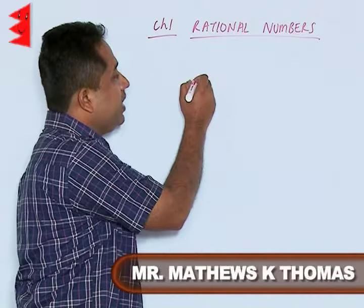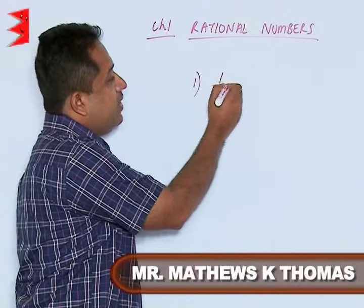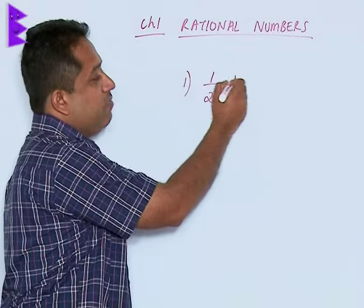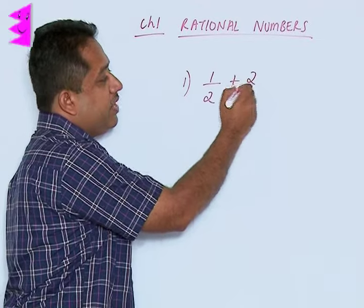Now let us start with addition. Let us say we are given a number 1 by 2 which is a rational number and we have to add it to another rational number 2 by 3.